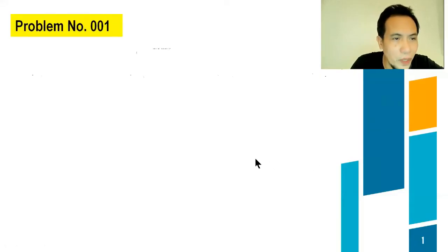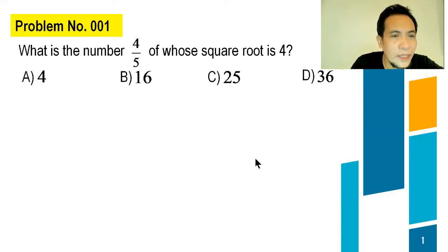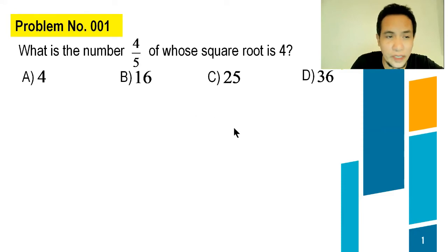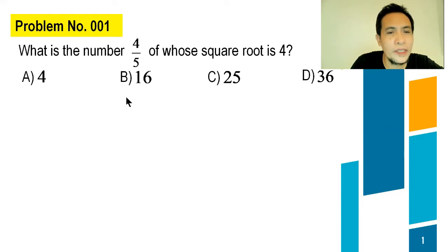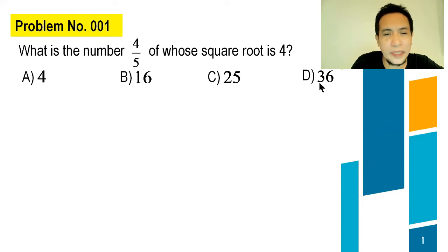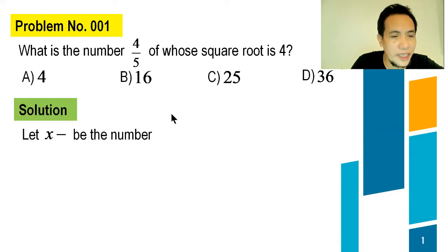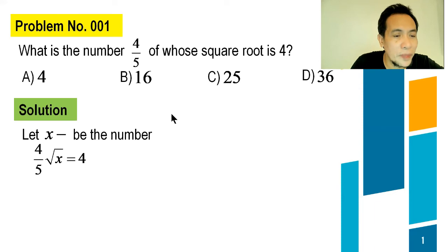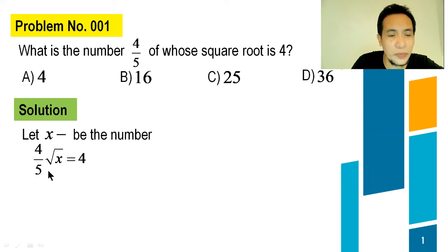Problem number 001: What is the number four-fifths of whose square root is four? For the choices: A, 4; B, 16; C, 25; D, 36. For the solution, let X be the number. Four-fifths of the square root of that number is equal to four. So this is the equation.